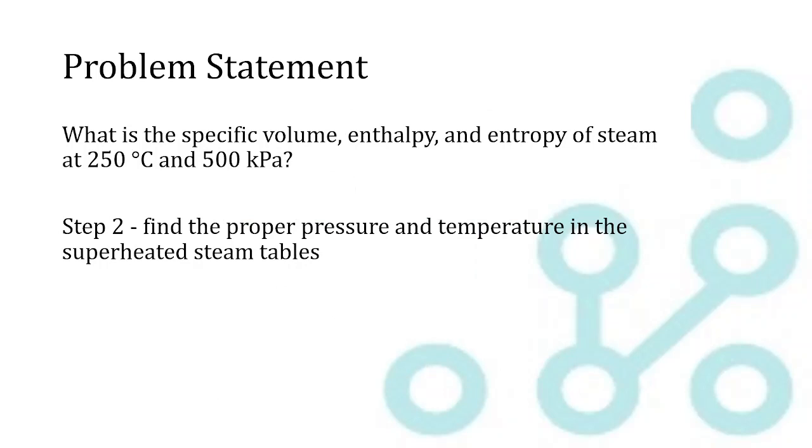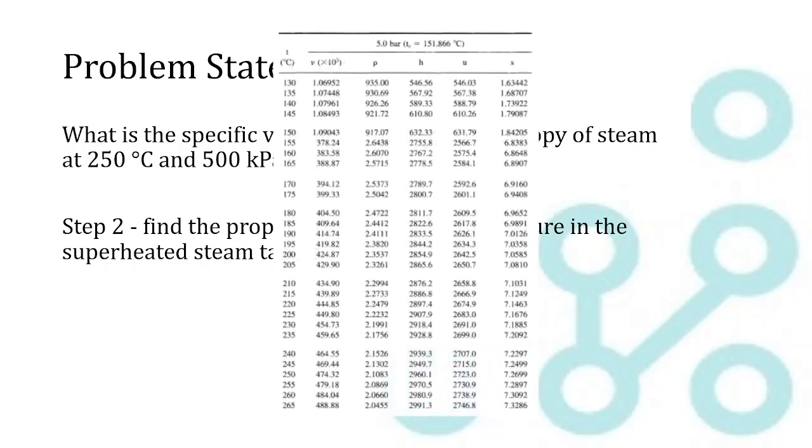And the second step is just finding the proper pressure and temperature in the superheated steam tables and pulling out the proper values. So next we go to our superheated steam table, in this case for 5 bar, since we are at 500 kilopascals. And we find the proper temperatures, in this case 250 degrees C, which you can see is located down here.